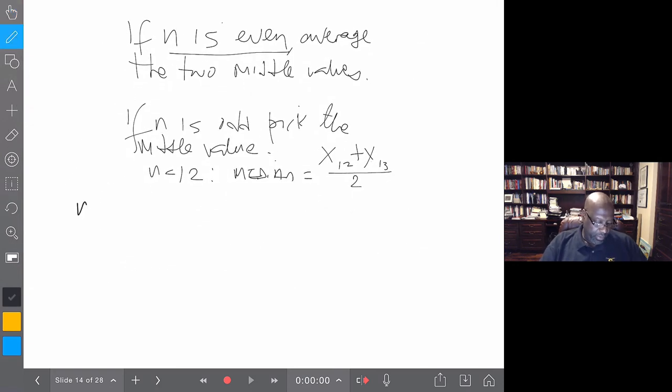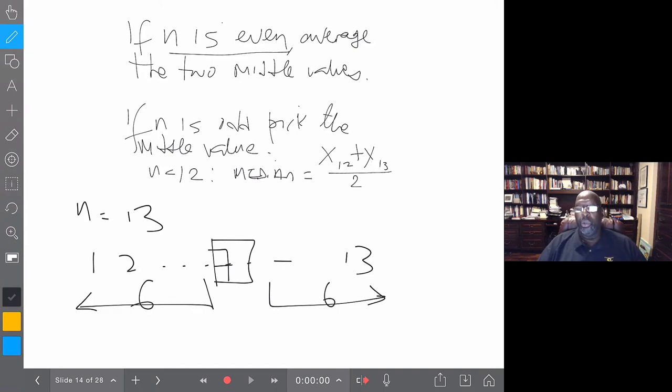If n instead was 13, then as we get to 13, the 7th value, value number 7, would be the one in the middle because there are now 6 values on this side, 6 values on that side. And so we would choose the 7th value. So the median would be x7. Note that the median is not 7. The location of the median is the 7th value. And so we denote that 7th value by x7, where x is the value, 7 is the location of that value. So that is the median, how we calculate the median. If n is even, we pick the two middle values and we average them. If n is odd, then we simply pick the middle value. And that is how we would identify the median.